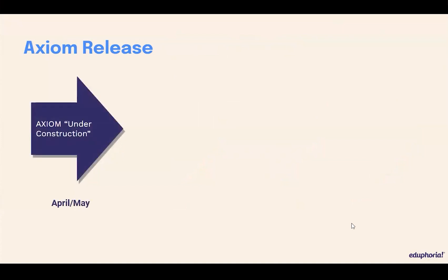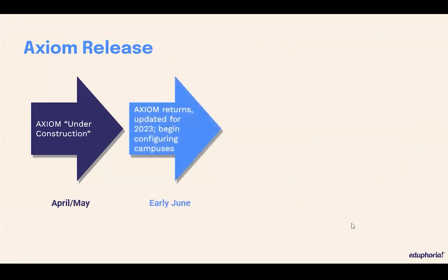Right now, if you try to log into Axiom, you may notice that it's not there. You go in there and there's a link to this webinar and some information about data not yet being available. Sometime in early June, that's going to change and we're going to return Axiom to your screens. Axiom is running in the background as soon as you load data files in, but as soon as we're done with some of our updates, you'll be able to go in and configure your campuses based on available data. If you go to the CCMR verifier and everything looks good, you can start entering that information now. If you've got some discrepancy in your CCMR data and you're waiting for the second round of information, you might want to wait on that. But you can begin configuring Axiom once we turn it back on — it will be updated for 2023.